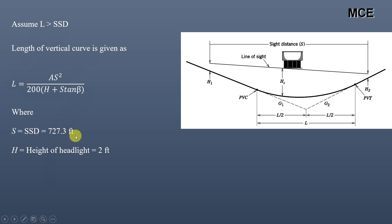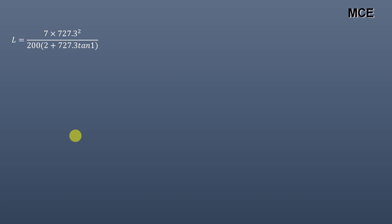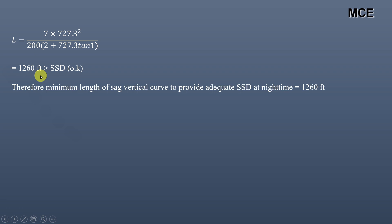H is the height of the headlight, which is 2 feet according to AASHTO. Beta is the inclined angle of the headlight beam, which is 1 degree, and A is the absolute difference of grade, which in our case is 7%. After putting in the values, we get the length of the curve equal to 1260 feet, which is clearly greater than SSD. Therefore our assumption is correct, and the minimum length of the sag vertical curve to provide adequate stopping sight distance at night time is 1260 feet.